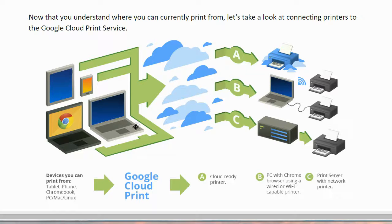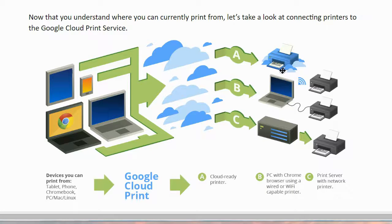Now that you understand where you can print from, let's look at connecting printers to the Google Cloud Print service. Here we have a diagram: you can print from your tablet, phone, Chromebook, PC, Mac, or Linux computer that is connected to the cloud — meaning the internet — and you can print to your cloud-ready printer, a PC with the Chrome browser using a wired or wireless printer, or a print server with a network printer.